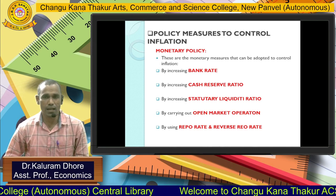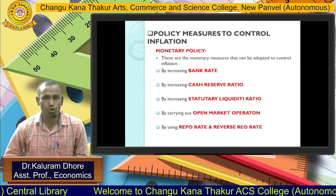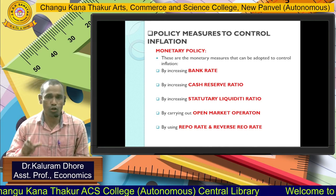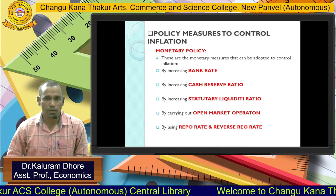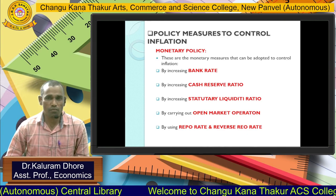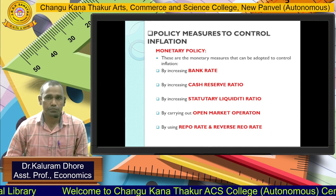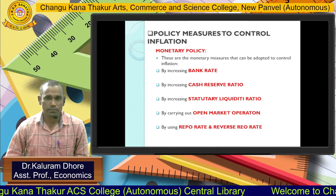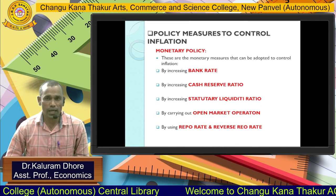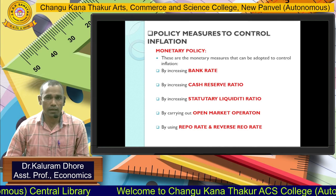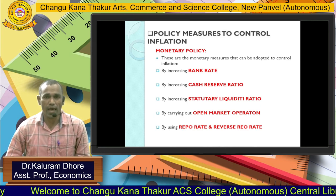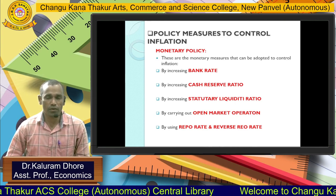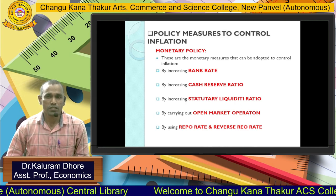Third is SLR — Statutory Liquidity Ratio. By increasing the Statutory Liquidity Ratio, RBI keeps control on inflation. All commercial banks are required to maintain liquidity with them according to RBI's rules and regulations. When RBI starts increasing the Statutory Liquidity Ratio, all banks are required to keep more liquidity in their deposits and facilities. Therefore, SLR also helps the RBI keep control on the general price level in the economy.